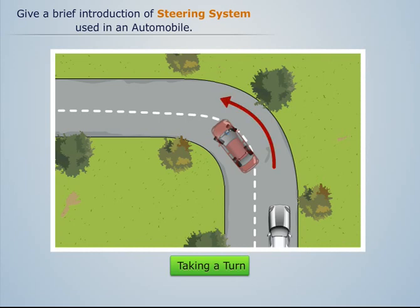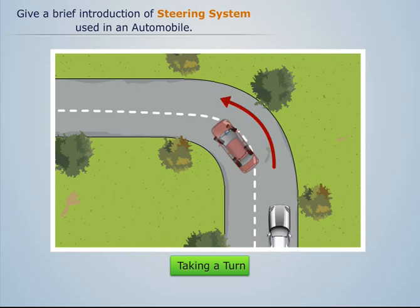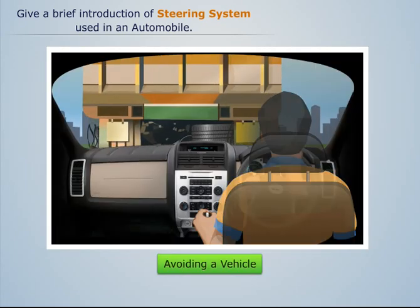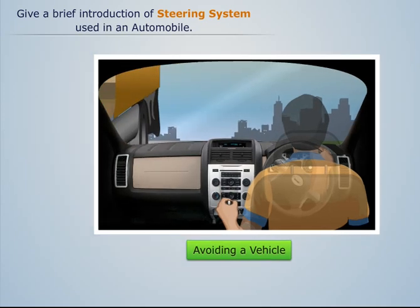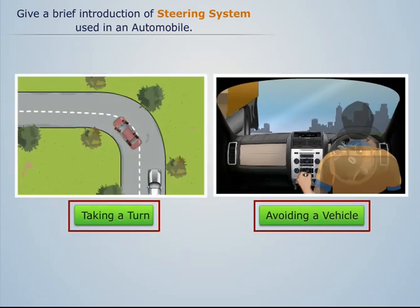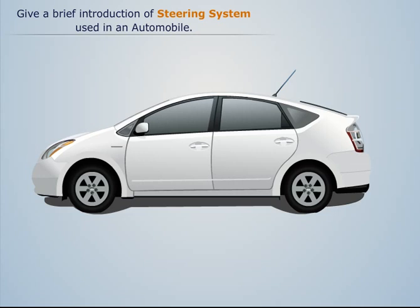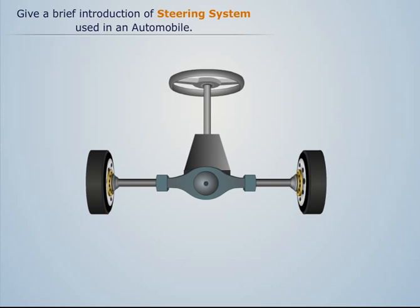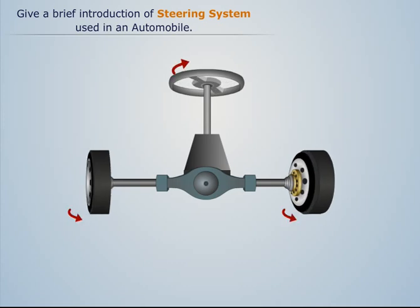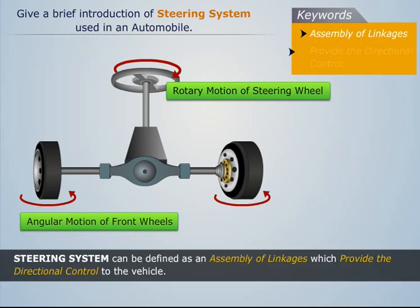During the vehicle's movement on the road, there are various instances when it needs to be steered, such as while taking a turn or avoiding a vehicle. To cater to such requirements, a mechanical assembly is installed in the front of the vehicle called the steering system. This system converts the rotary motion of the steering wheel into angular motion of the front wheels.